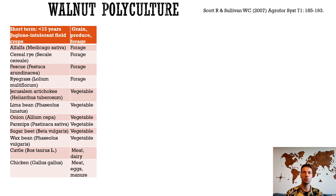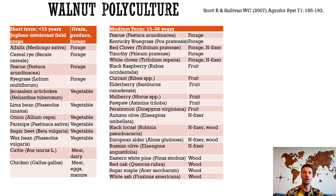Soybean and wheat could be cultivated between the tree rows without yield decrease for the first 7 years, and corn for the first 10 years. Jerusalem artichoke, sugar beet, and certain species of beans are tolerant to juglones. Between 15 and 30 years of walnut establishment, shade and juglone-tolerant crops can be grown. Black raspberry, currants, elderberry, and wild grapes can be grown under walnut canopies, whereas blackberry grows outside of the drip zone area.